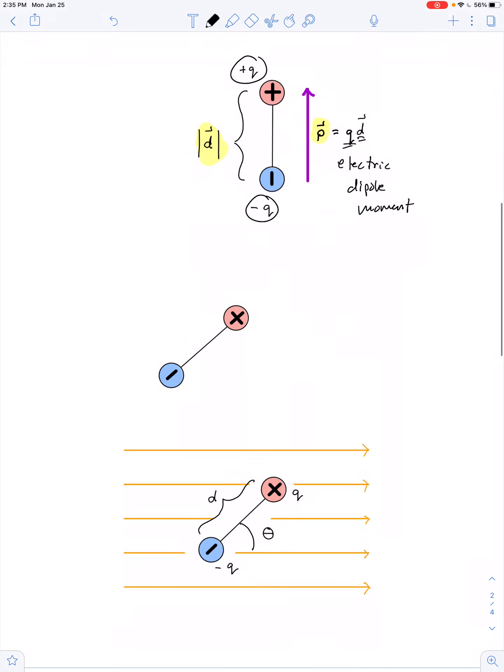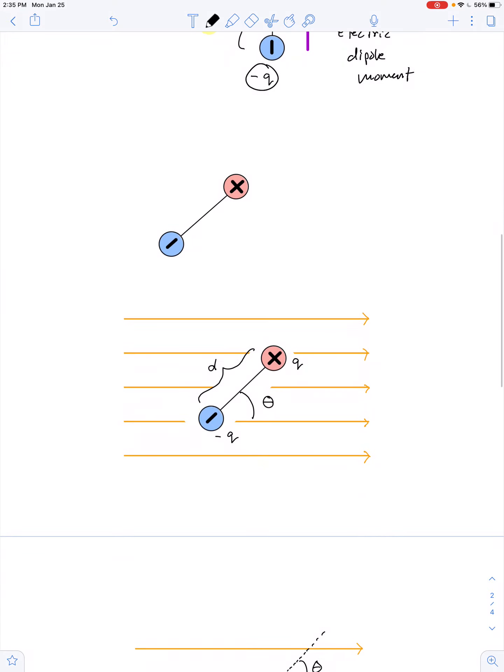Well, there's a torque on this molecule if you place it in an electric field. Let's imagine a uniform electric field shown here with the orange field lines. If we were to place our electric dipole in the field, the positive charge would experience a force that wants to pull it in the direction of the electric field, and the negative charge wants to move opposite the field. So the molecule would want to rotate on its axis. So that's what we mean when we say there's a torque on a dipole.